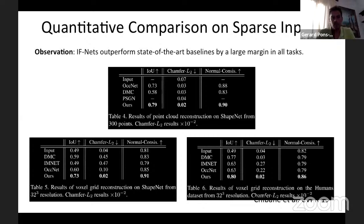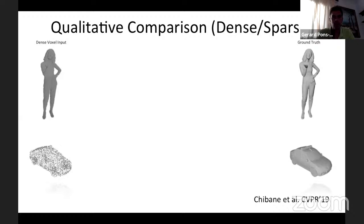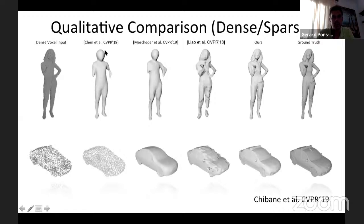We evaluated IF-Net on several tasks like super-resolution, point cloud completion, and others on ShapeNet, obtaining significantly better results than previous works. For the qualitative results, given a dense voxel input the output is a detailed 3D mesh, and given a sparse point cloud the output is a 3D mesh. Our model reconstructs articulated structures nicely — which was failing in other models due to the point encoding — and retains nice detail in the output.